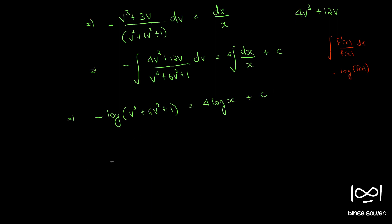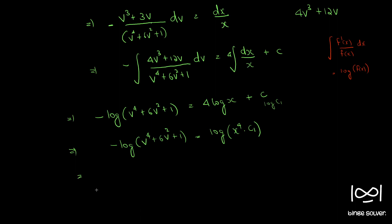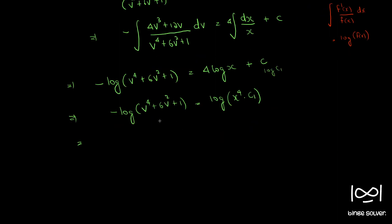Writing C as log(c₁), we get: −log(v⁴ + 6v² + 1) = log(x⁴) + log(c₁), using the property that 4·log(x) = log(x⁴). Using the log(a) + log(b) = log(ab) property, we combine the right side, and then take e to the power on both sides.